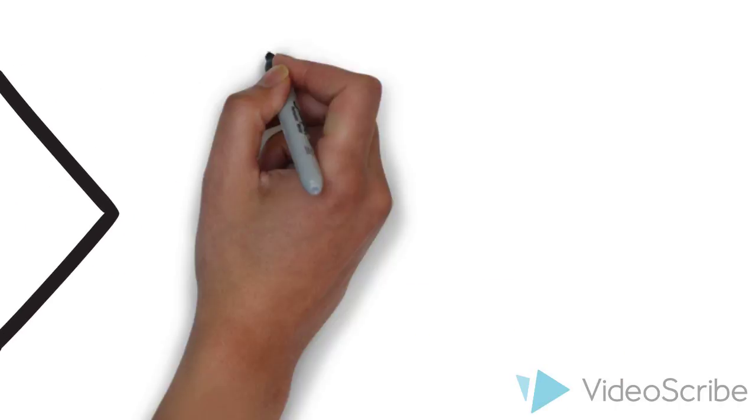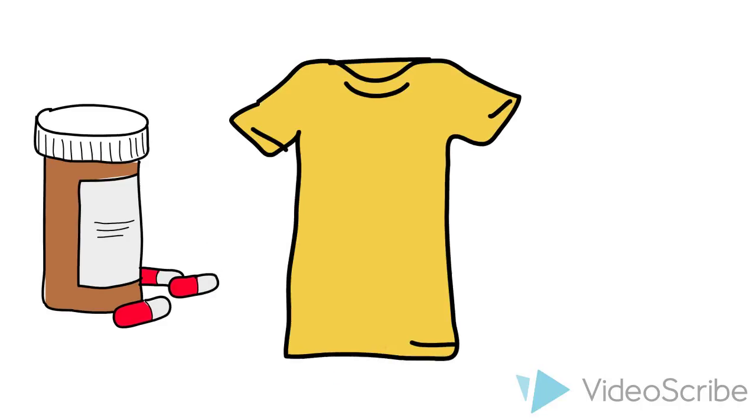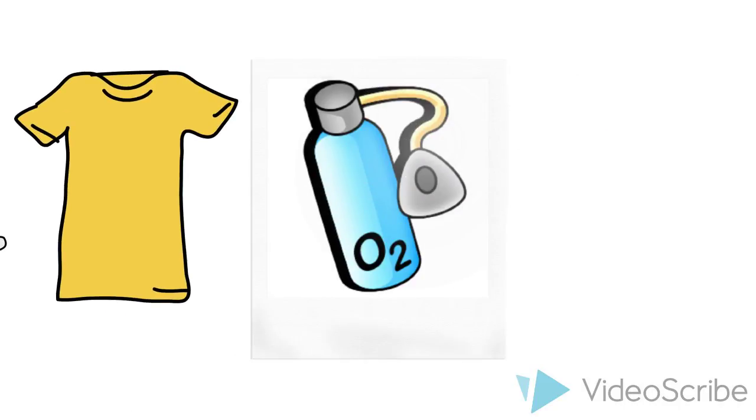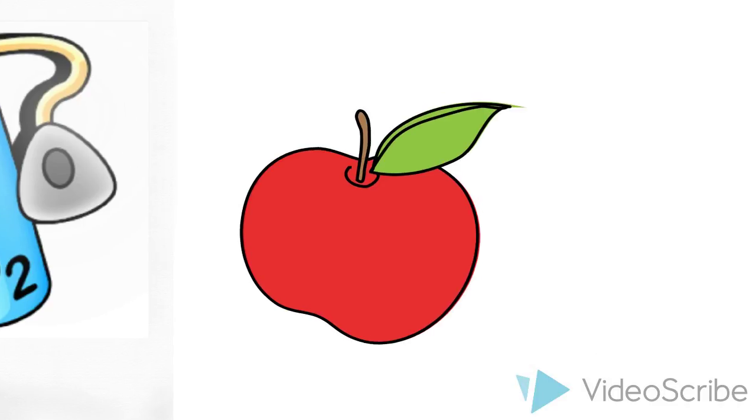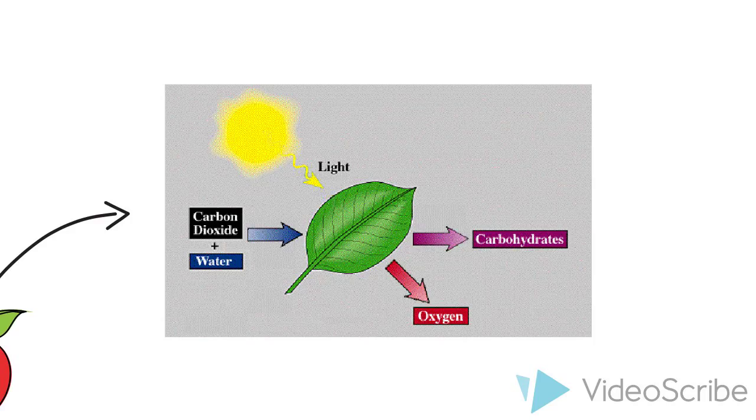Plants give us medicine, clothes and the oxygen we need to live, and they also give us their own food. For that they need water, minerals, light and energy from the sun, and they also need carbon dioxide which is very important.